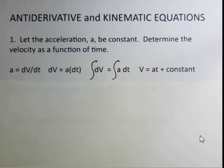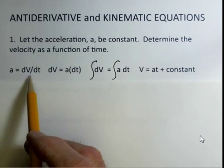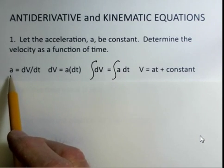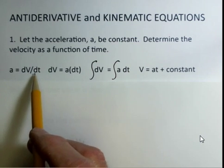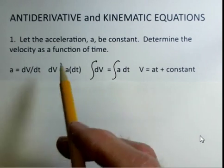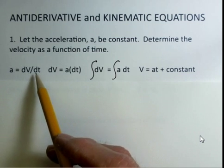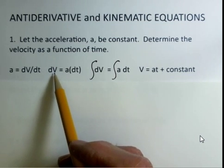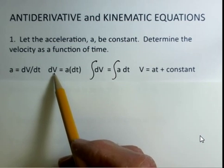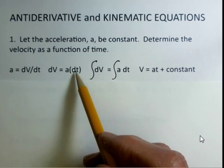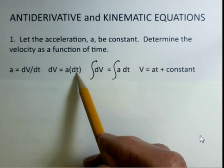The first equation we want to develop is what's the equation for velocity as a function of time? Well, we'd be reminded that the instantaneous acceleration is the derivative of velocity with respect to time. So let's multiply both sides by dt, and then I'm putting dv on the left side. So an infinitesimal change in velocity equals acceleration multiplied by an infinitesimal change in time.